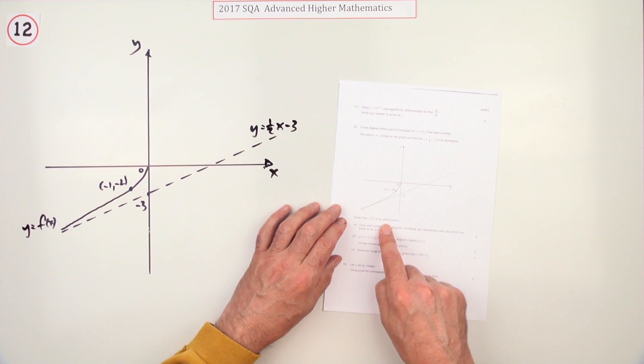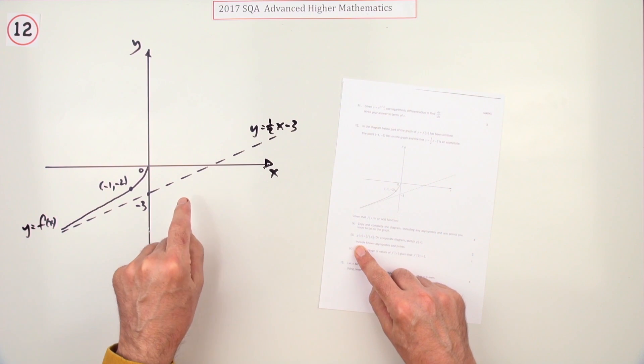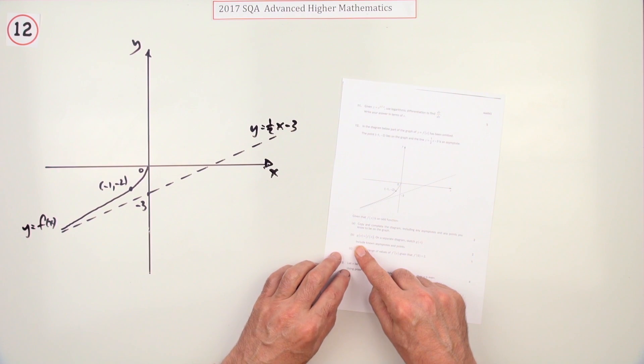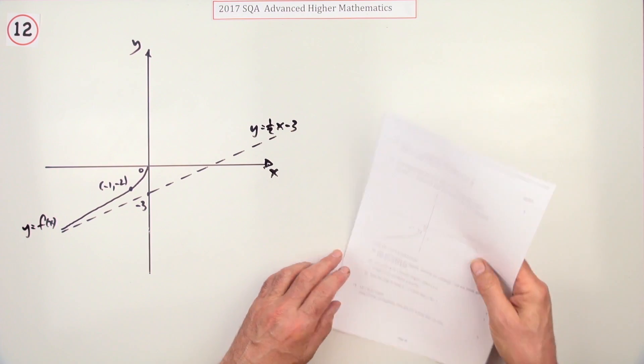Given that f is an odd function, copy the diagram and fill in any asymptotes and any points you know should be on the graph.